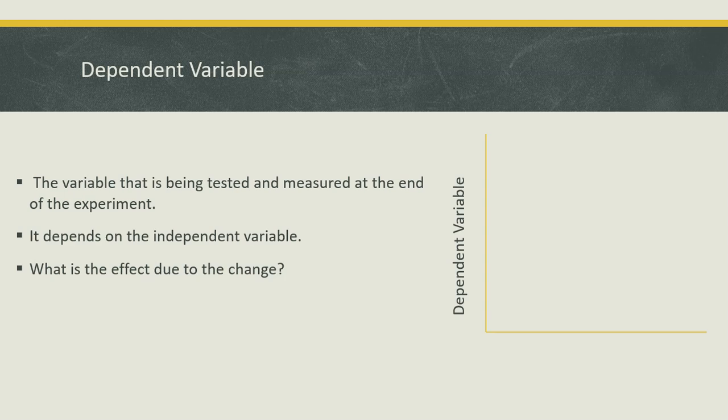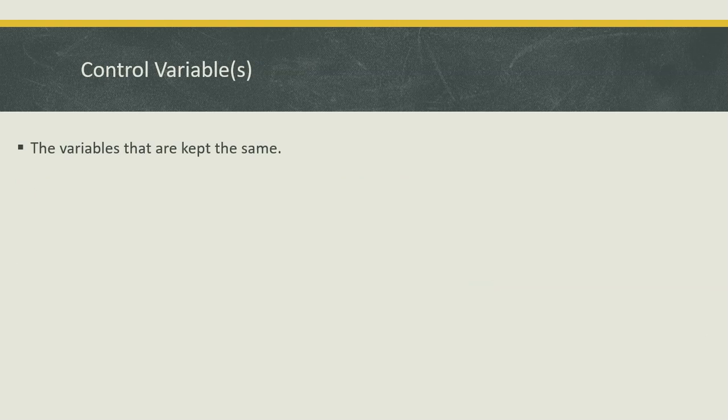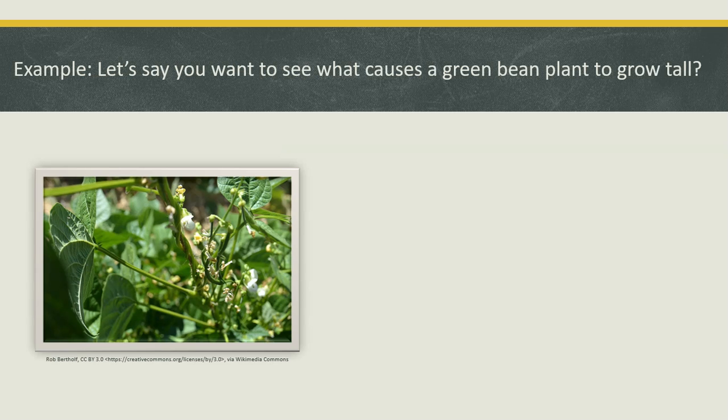When you look at a graph, the dependent variable is on the y-axis. Now let's talk about a controlled variable. This is the variable — or variables — that is kept the same, depending on the experiment.